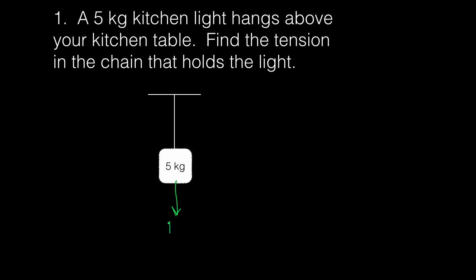We know that there's a force of gravity that points straight down, and that's equal to its mass times the acceleration due to gravity. So that's 5 kg times 9.8, and 5 times 9.8 is equal to 49, so that's equal to 49 newtons.